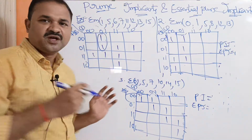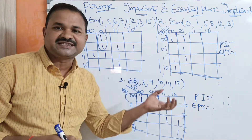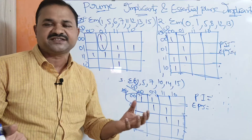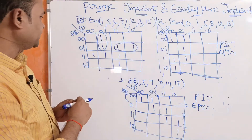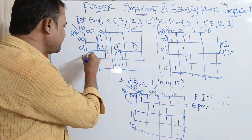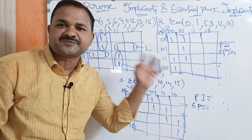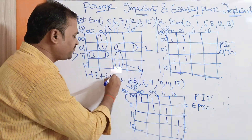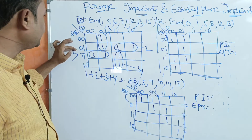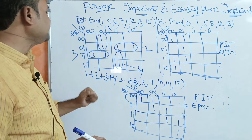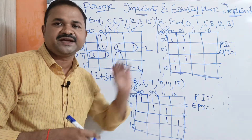We can make these two cells as one group. Groups are in powers of 2, so first we look for 16 cells, then 8, then 4, then 2, then 1. We identify four groups: group 1, group 2, group 3, and group 4. The simplified expression is group 1 plus group 2 plus group 3 plus group 4. For group 1, A-bar is common, and observing 0,1 gives C-bar D, so the minterm is A-bar C-bar D. Likewise, we can write the minterms for the remaining groups.